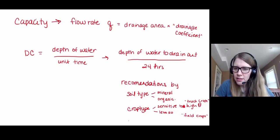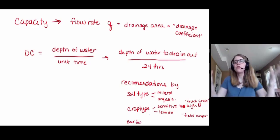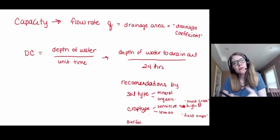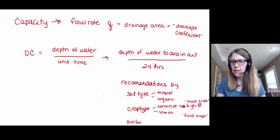And then the final thing is, do we have any surface connections? Are we only allowing water to get into that tile line by coming through the soil, or do we also have direct surface connections to drain surface water as well? Because if we do, we're going to need to increase the capacity of the lines.